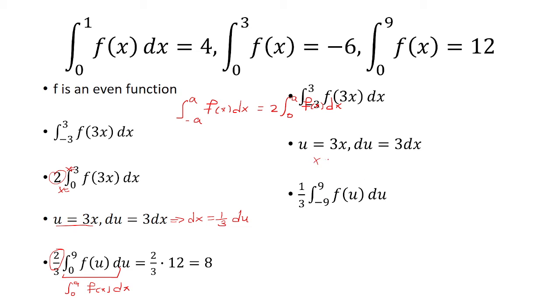And so when x is 3, you get 9, and when x is negative 3, you get negative 9. So you would just plug it into that equation. And then you still get here dx is 1 third du. So now you have to use this rule.